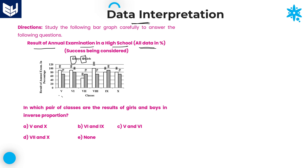Boys are indicated with white and girls with dark color. The classes are from 5 to 10 — that is 5, 6, 7, 8, 9, 10. These 6 classes' annual examination results are provided as pass percentage only. For example, class 5 boys are 90% pass, meaning remaining 10% failed, because total equals pass plus fail.